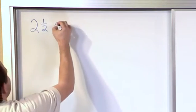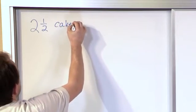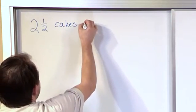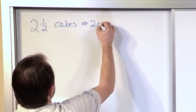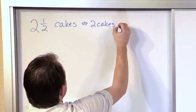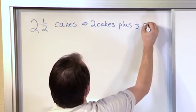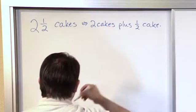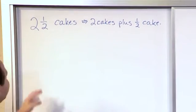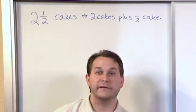So if you have two and a half cakes, let's say, then what you really have is two cakes plus one half cake. So literally in words it means exactly how it sounds. Two and a half cakes mean you have two cakes plus another half.